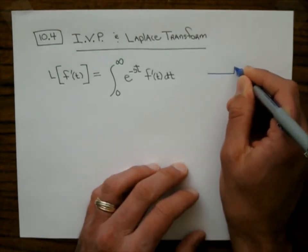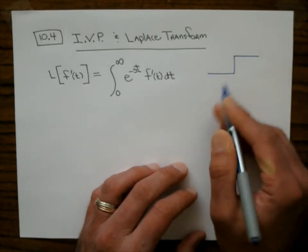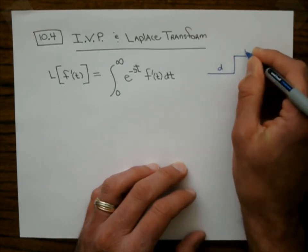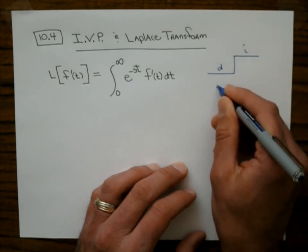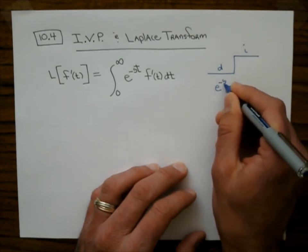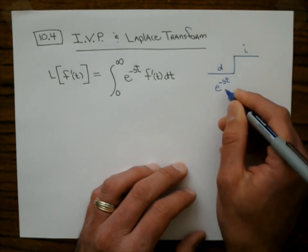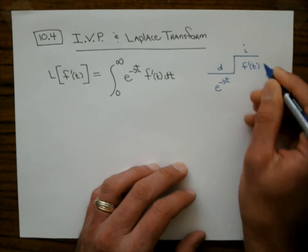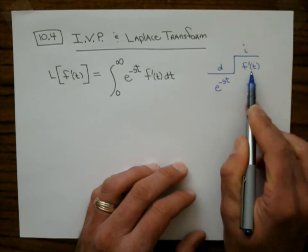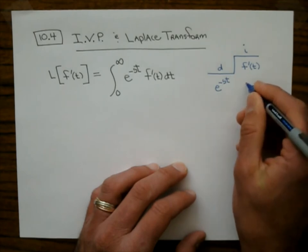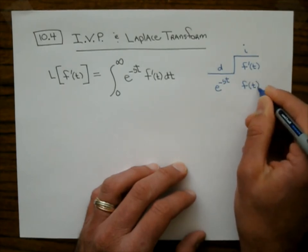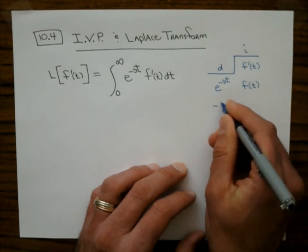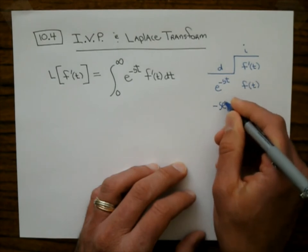Some of you already know what this means. This is integration by parts — there's the derivative, there's the integral. I'm actually going to put e to the negative st on the derivative side, which is unusual. The reason I'm doing that is because the other part is f prime, and I know how to take the integral of f prime — the integral of f prime is f.